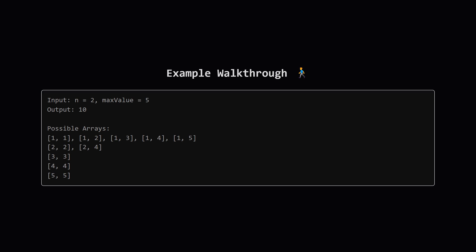Adding them up: 5 + 2 + 1 + 1 + 1 = 10. So there are 10 ideal arrays for n=2, maxValue=5. Makes sense.